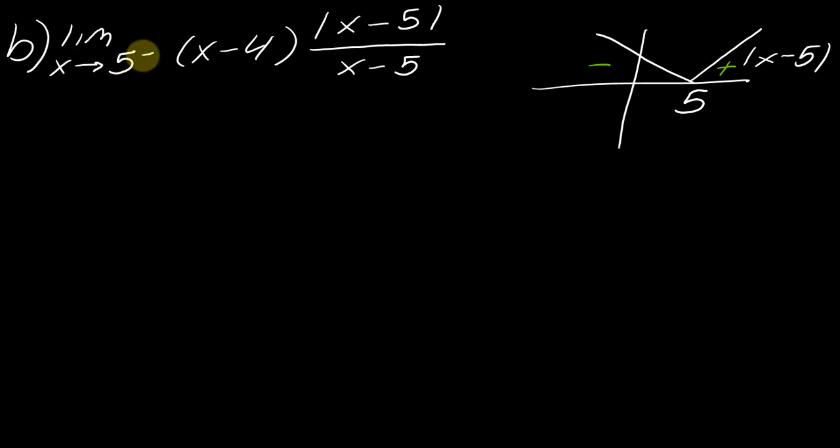Okay, so in this case, I'm approaching five from the left. So this is the negatively sloped side of this function. So that will allow me to basically rewrite this whole problem now as negative X minus five over X minus five.